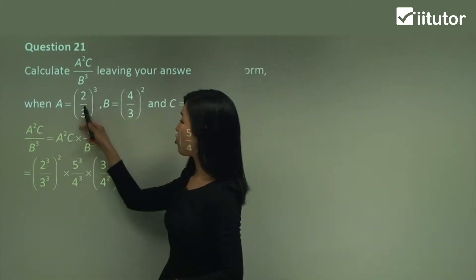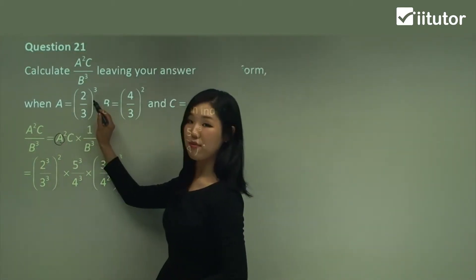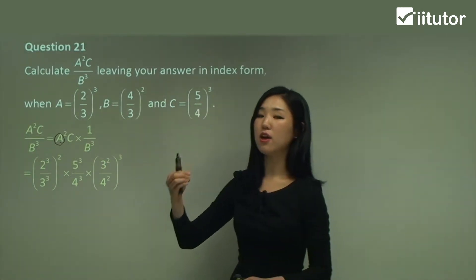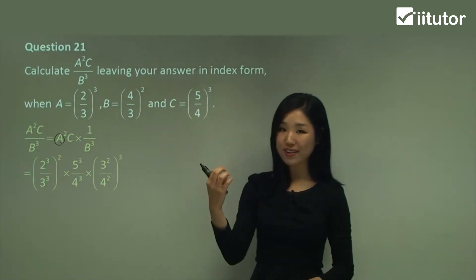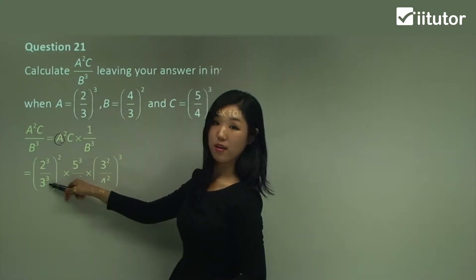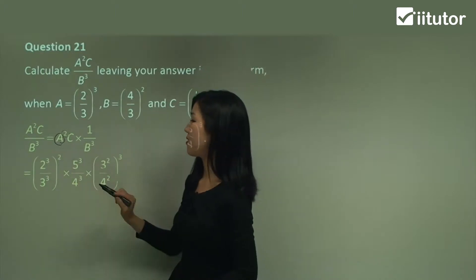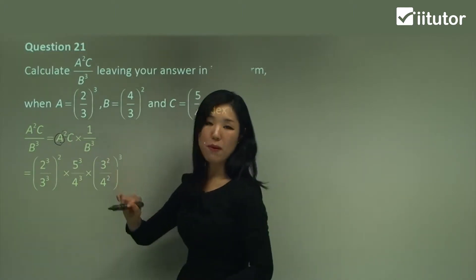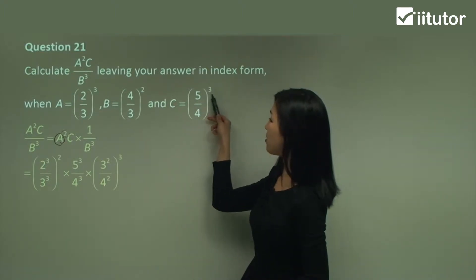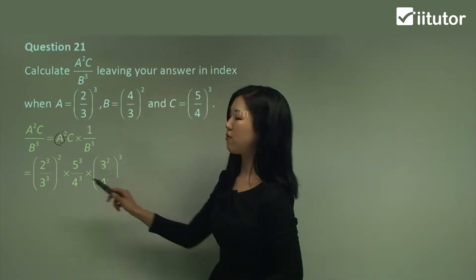So A is (2/3) cubed, so I replace this A with that fraction. But you should know that if I have a fraction to the power of something, you always power that to the numerator and the denominator. So I do 2 cubed and 3 cubed, and that squared is what we do for this first part. Now C I don't have any more powers so I simply put in, but as I said you have to cube the numerator and the denominator. So do 5 cubed over 4 cubed.